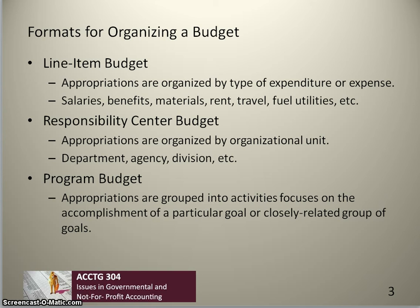Under a responsibility center budget, appropriations are organized by organizational unit — departments, agency, or division. And under a program budget, appropriations are grouped into activities that are focused on the accomplishment of a particular goal or closely related group of goals.